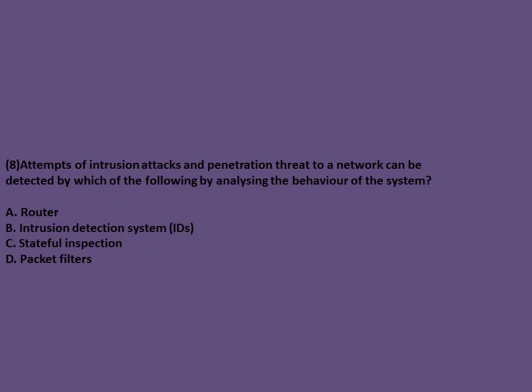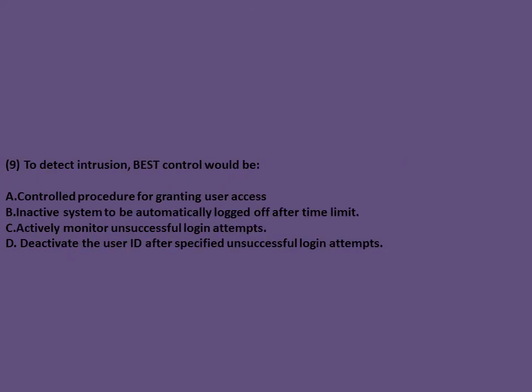Exam question: Attempts of intrusion attacks and penetration threats to a network can be detected by analyzing the behavior of the system. The answer is option B. Router, stateful inspection, and packet filter are types of firewalls. To detect intrusion, the best control would be to actively monitor unsuccessful login attempts.